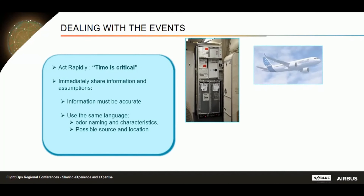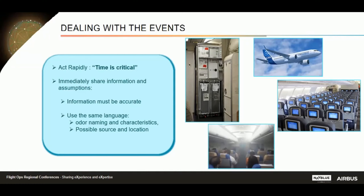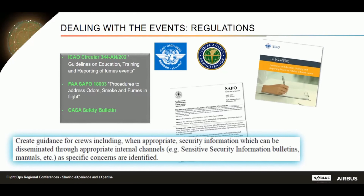For all smoke events, time is critical because of the risk of hidden fire, and it is really important to share information and assumptions between flight crew and cabin crew. Information must be accurate and the same language must be used to describe the situation. Airbus recommends that flight crew and cabin crew are trained for this. This recommendation is supported by the ICAO circular on guidelines for education, training, and reporting of fume events, and also by the SAFO that requests specific guidance for flight crew and cabin crew to manage fumes with odors.